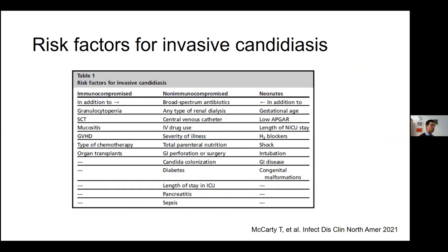These are well-known risk factors for invasive candidiasis. In this review, risk factors are subdivided into three groups: people who are immunocompromised — mostly referring to those with problems of their innate immune system — a large group of non-immunocompromised people who are still at risk for candidemia and invasive candidiasis, and then separately neonates. The factors within each host group summarize the major additional risk factors that amplify the risk for invasive candidiasis.